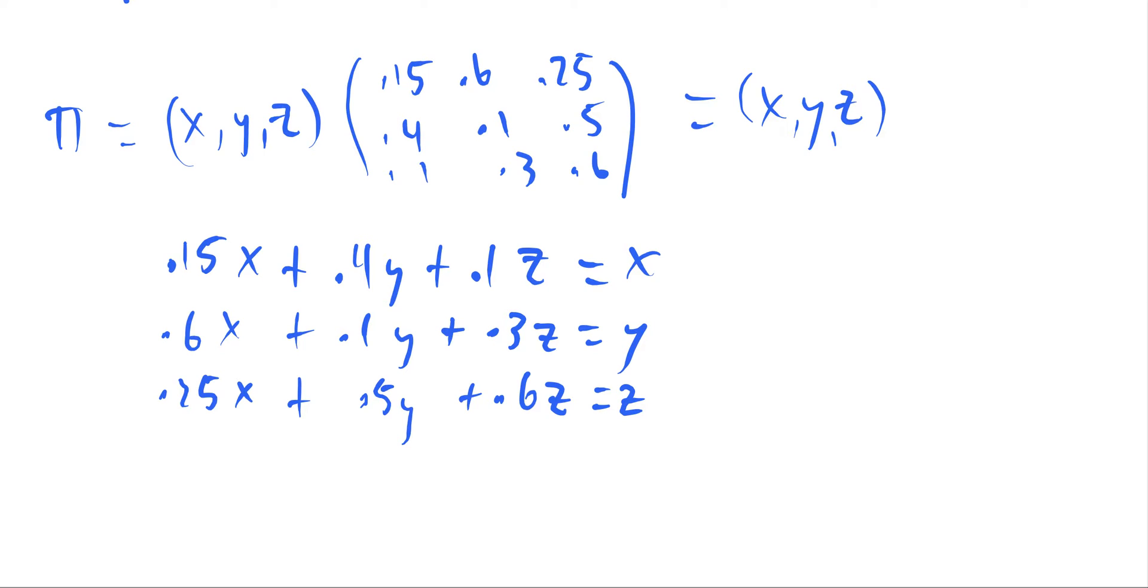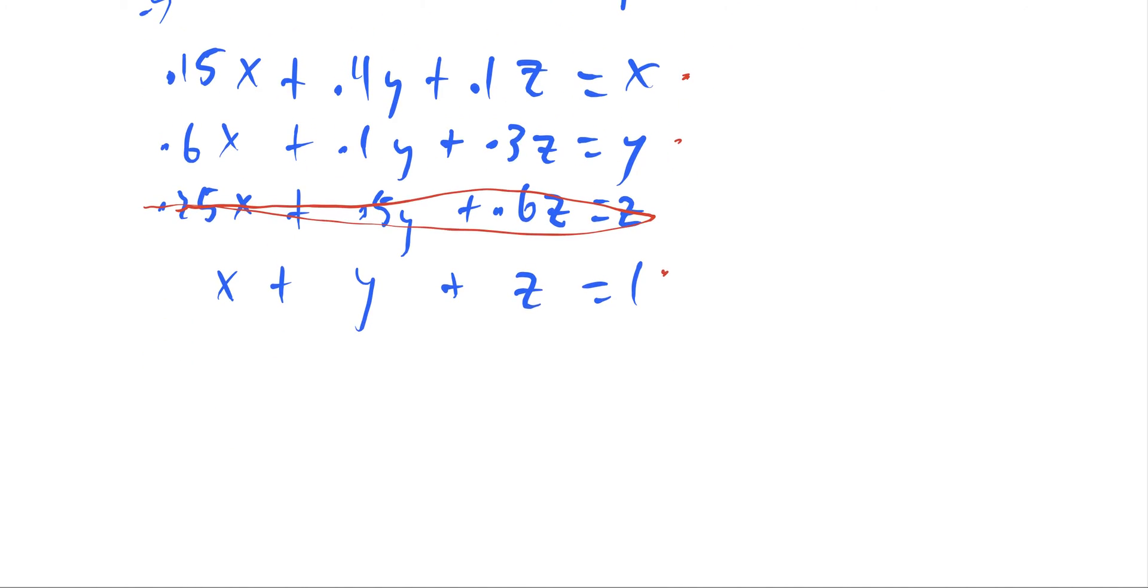But note that this is a probability vector. So it still needs to add to one. Here our pi is a probability vector. So x plus y plus z still needs to equal one. So sometimes if this doesn't work out, then we can scratch one of these out and then just use these three in order to solve that system of equations.